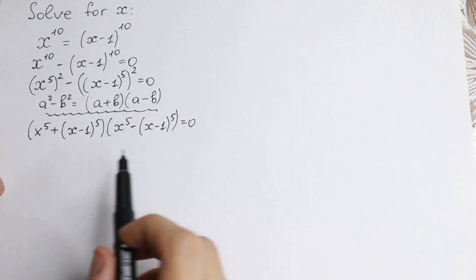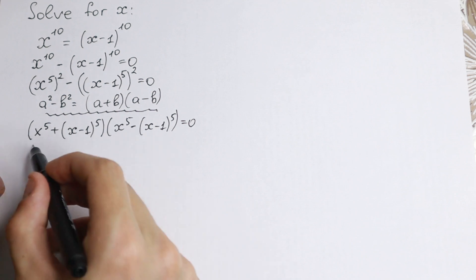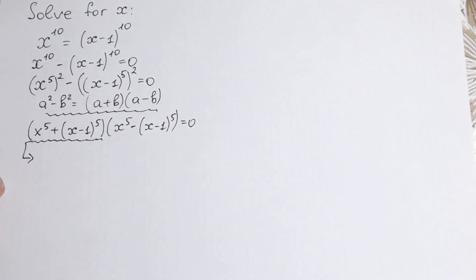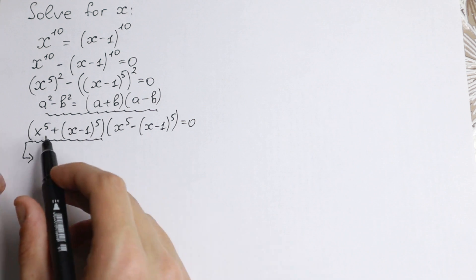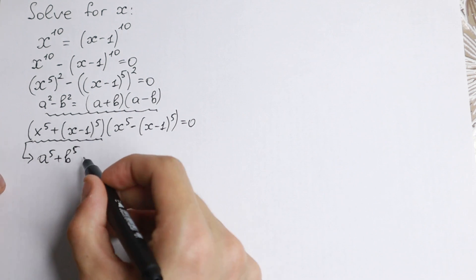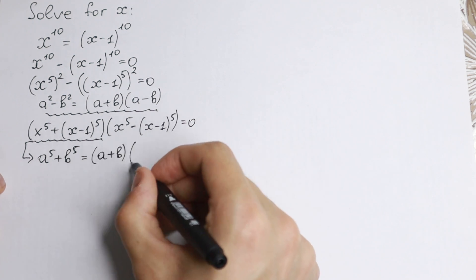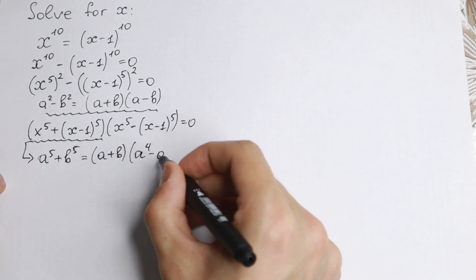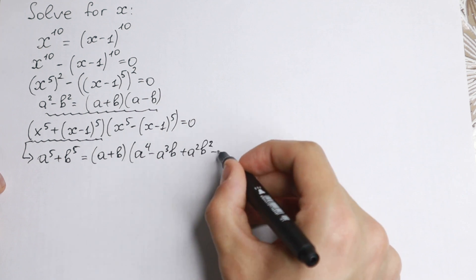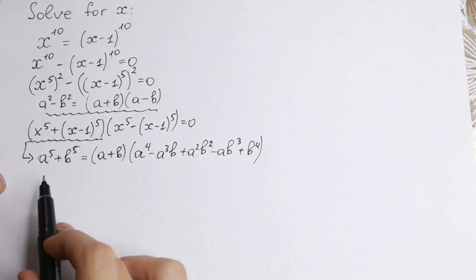Let's start with the first parentheses. If we have a product of two parentheses equal to zero, each parenthesis can equal zero. The first one has a sum of fifth powers, so we need the formula a to the fifth plus b to the fifth, which equals a plus b times a to the fourth minus a cubed b plus a squared b squared minus a b cubed plus b to the fourth.